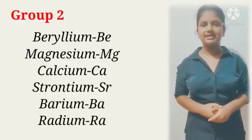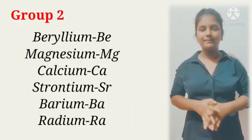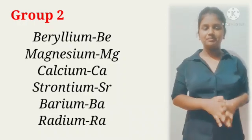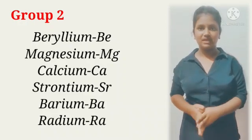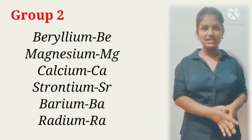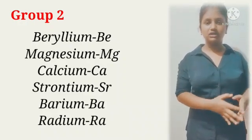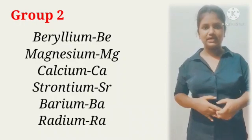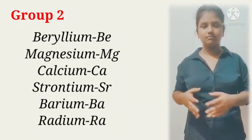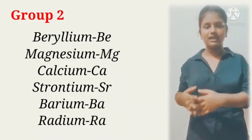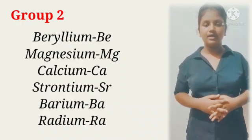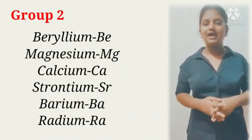Let's see group 2 elements: Beryllium Be, Magnesium Mg, Calcium Ca, Strontium Sr, Barium Ba, Radium Ra. Now I am going to tell you an easy method to remember these elements.